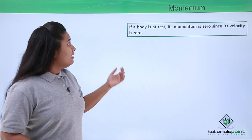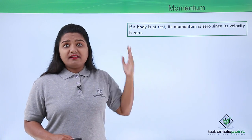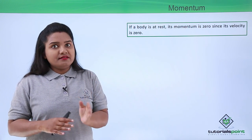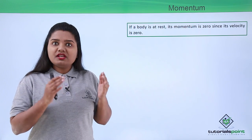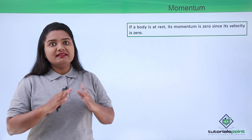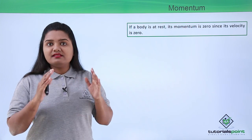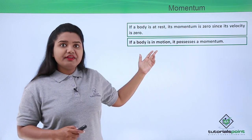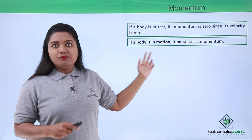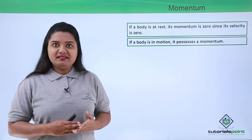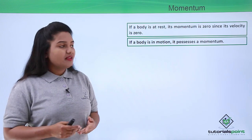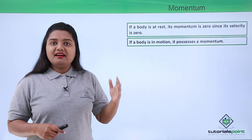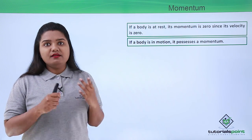For a body which is at rest, its velocity is zero since it is not moving at all. For such a body the momentum is zero — a body at rest has no momentum at all. Only if the body is moving does it possess momentum, since it has velocity along with mass. So a moving body possesses momentum whereas a body at rest has no momentum.